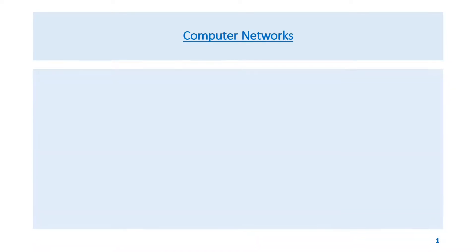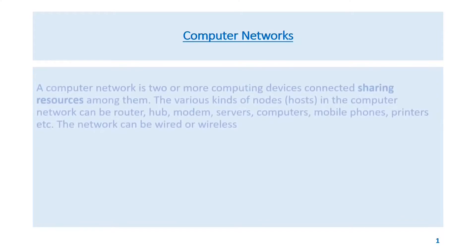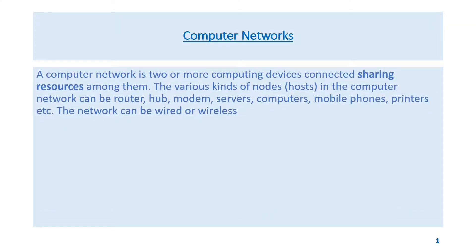In this video we look into computer networks. A computer network is two or more computing devices connected and sharing resources among them. The various kinds of nodes or hosts in a computer network can be routers, hubs, modems, servers.